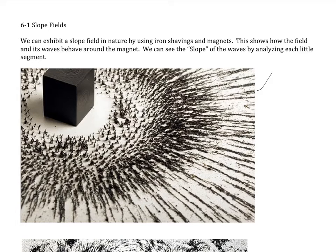We have some iron shavings, and the magnet has a force field that it projects out. It reacts by making these shavings all go in a certain direction. I can find a particular point and find the slope of what's going on at that point to see what the waves of this magnetic field are doing. That's the idea of slope fields.